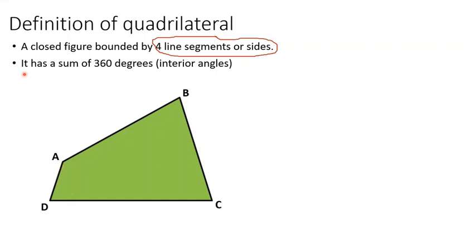Another feature of quadrilateral, it has a sum of 360 degrees. So the interior angles are what we're referring to here. When we say interior angles, these are the vertex angles. So like angle A, angle B, angle C, and angle D. So based on the feature of quadrilateral, when we add the measurement of angle A plus angle B plus angle C and angle D, it should be 360 degrees.